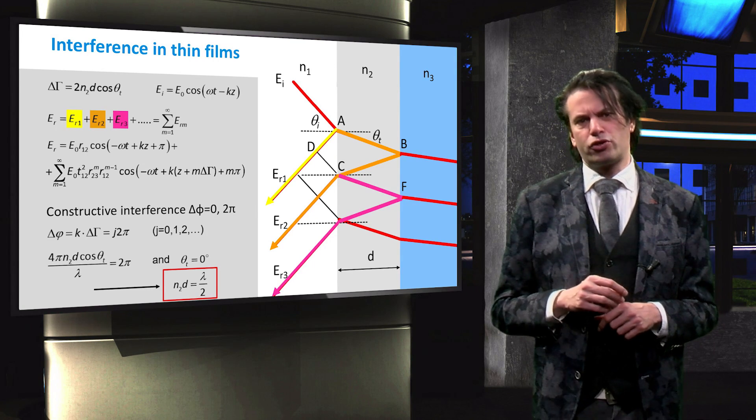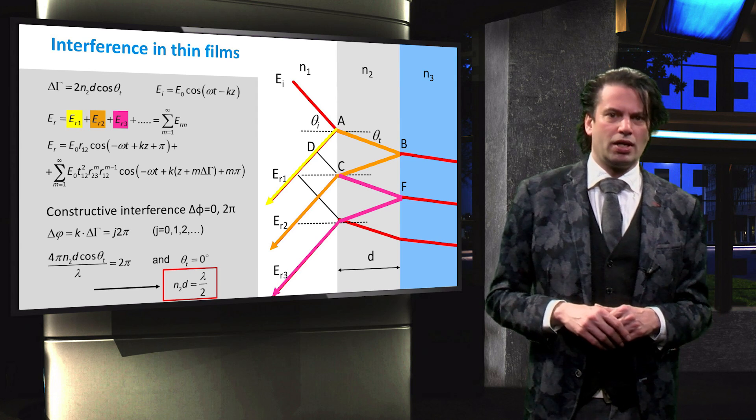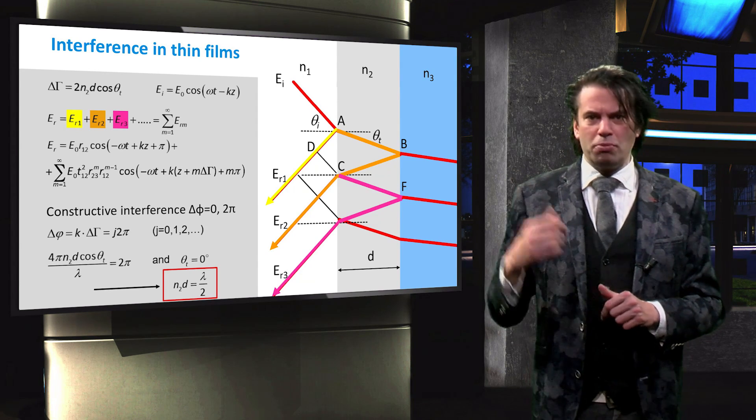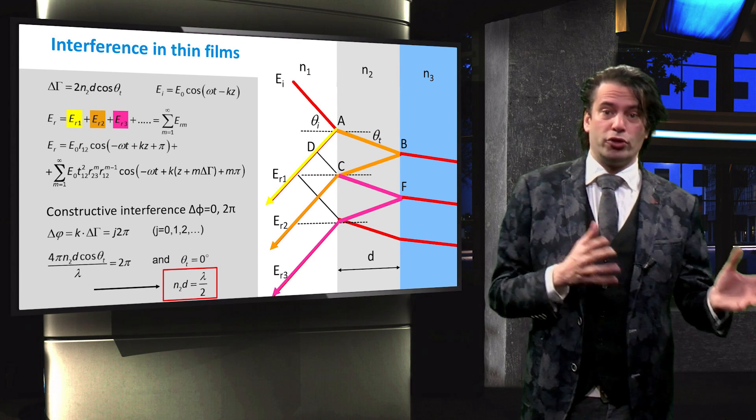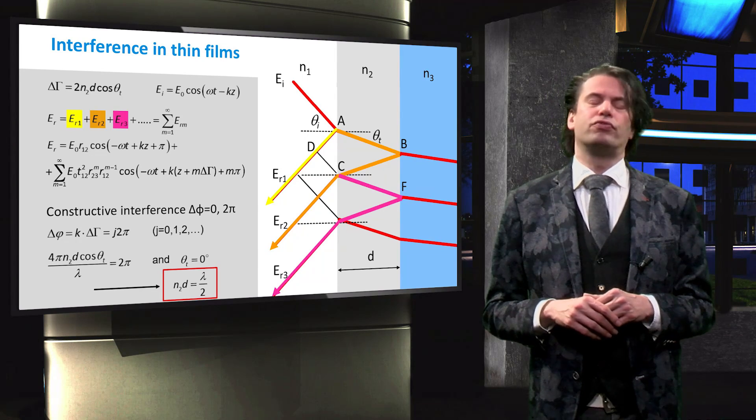Destructive interference occurs at a phase shift of an uneven number of pi. We can see that for normal incidence a 1 pi phase shift occurs when N times d equals 1 fourth of the wavelength.